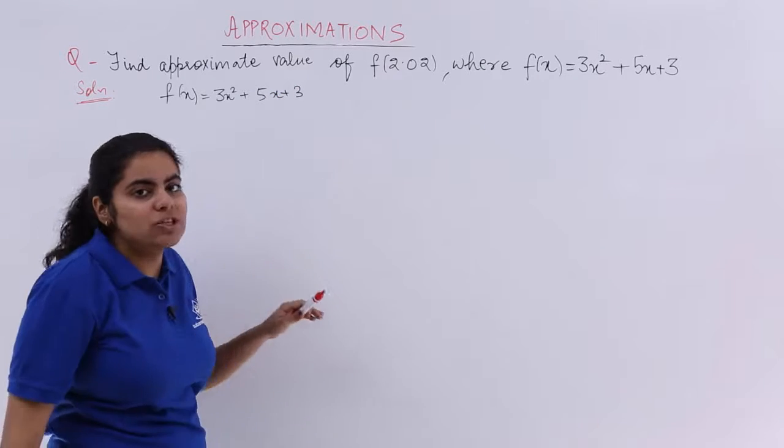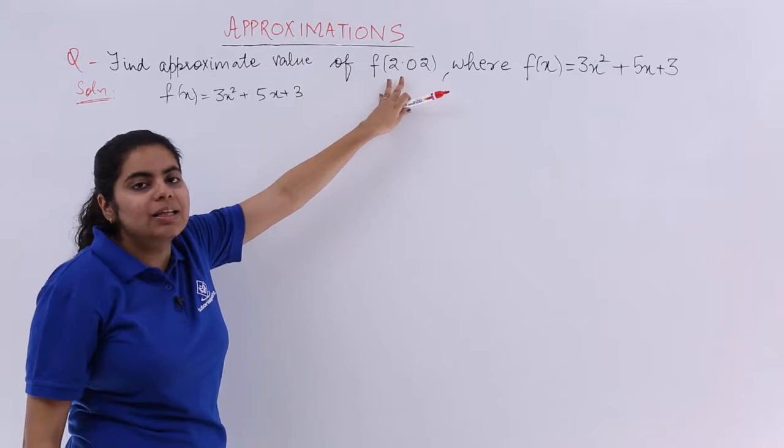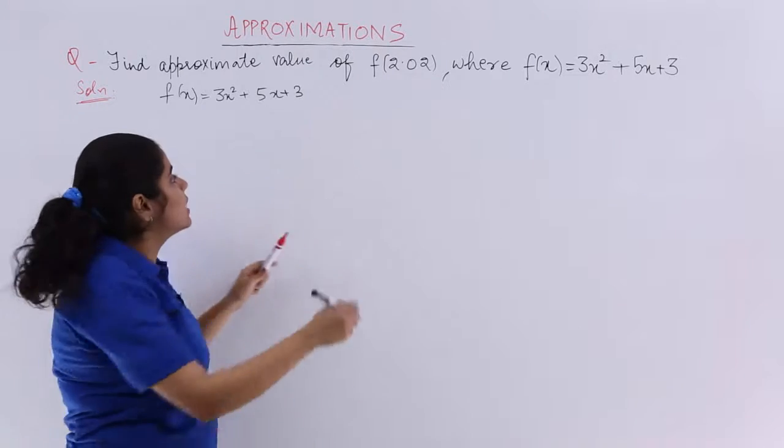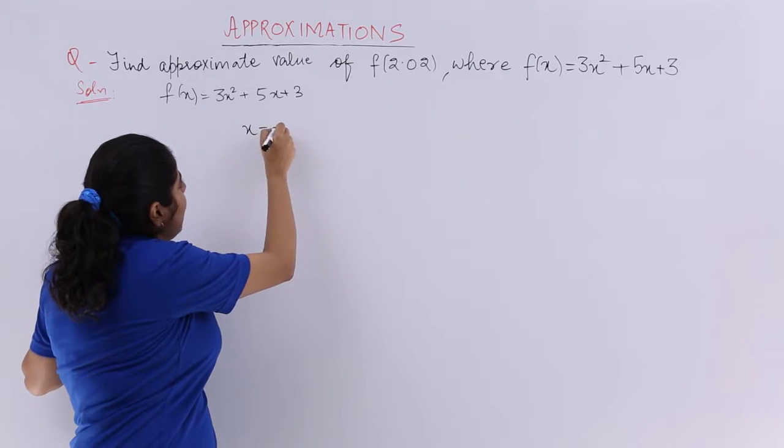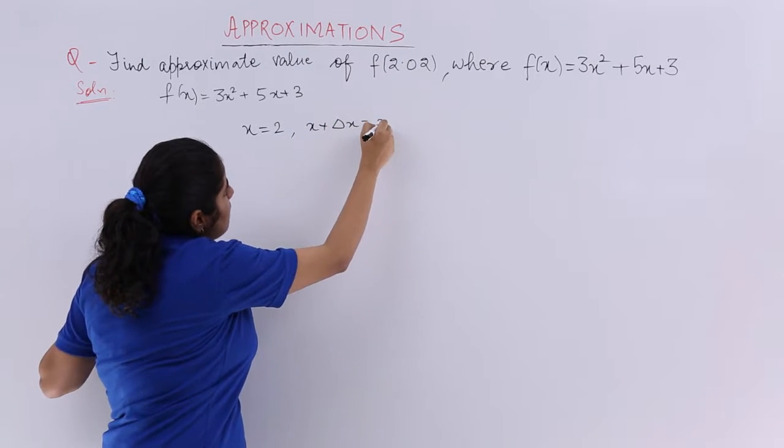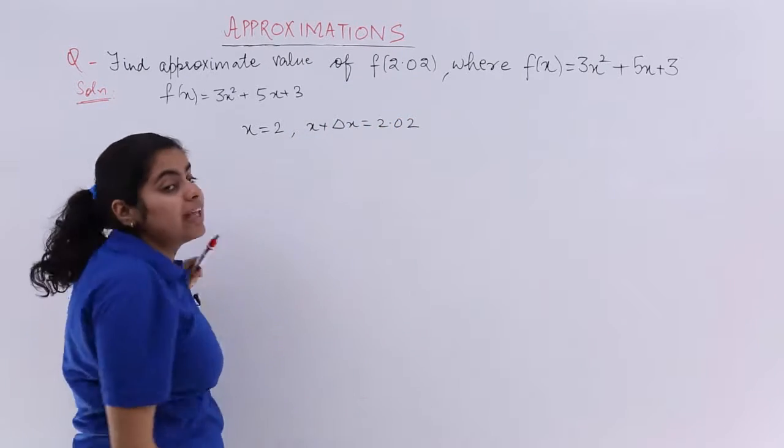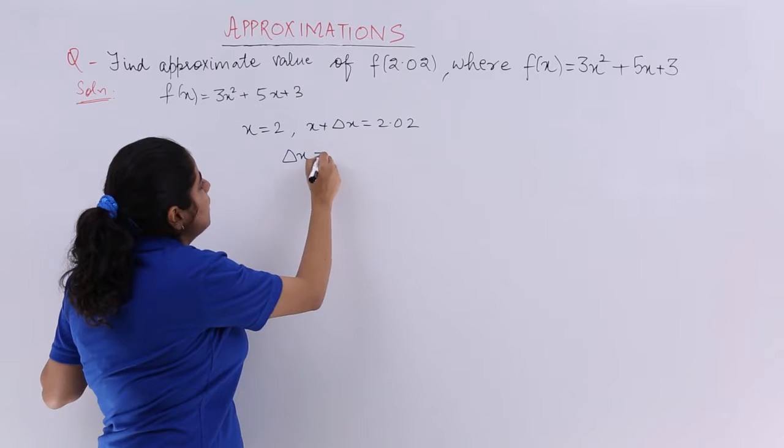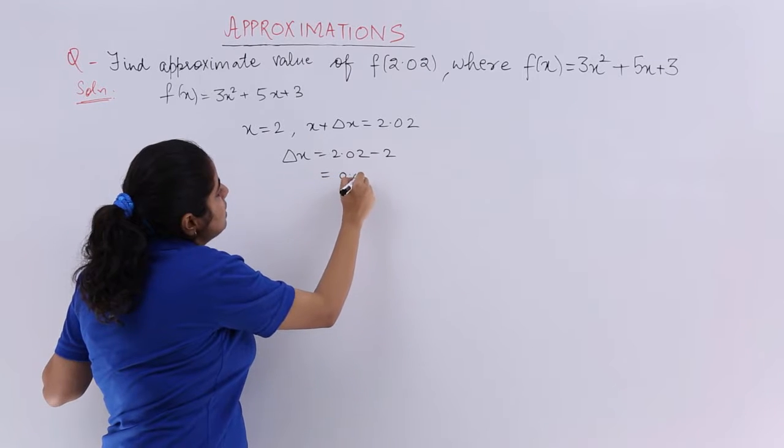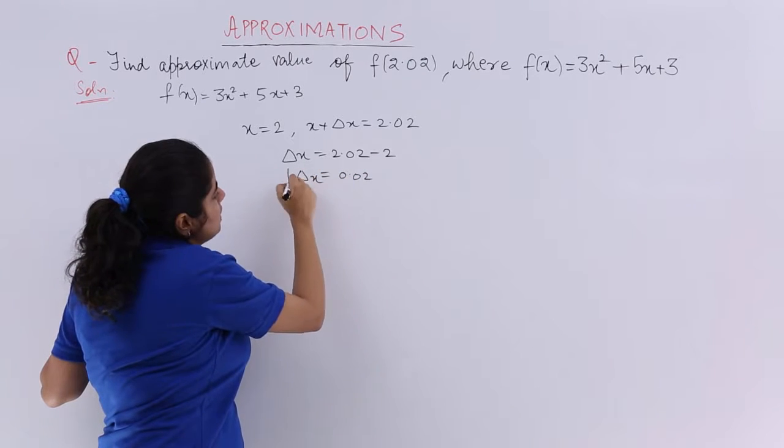In such kind of questions, let's see carefully this value. It is f(2.02). That means the actual value would have been 2 and the changed value is given to you as 2.02. That means what is my Δx? My Δx is nothing but 2.02 minus x, which is nothing but 0.02.